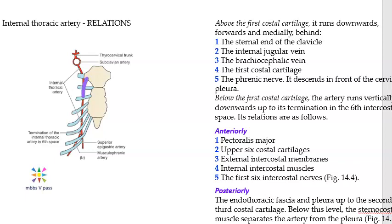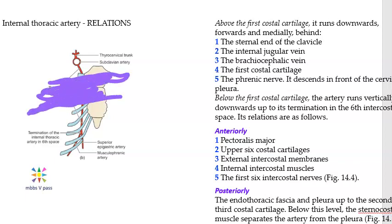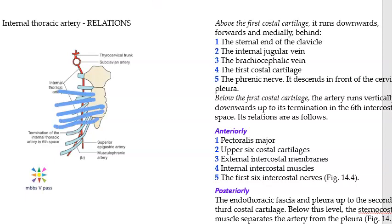Below the first costal cartilage, anteriorly you have the costal cartilage, and in front of that the pectoralis muscle. You also have the external intercostal membranes, internal intercostal muscles, and the intercostal nerves.